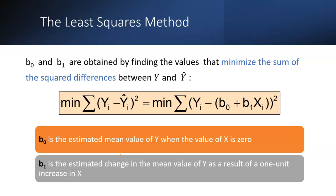The least squares method is very important for prediction. B0 and B1 are obtained by finding the values that minimize the sum of the squared differences between Y and Y-hat (the predicted value). The formula minimizes the sum of (Yi minus B0 plus B1*Xi) squared. B0 is the estimated mean value of Y when X equals zero, and B1 is the estimated change in the mean value of Y for a one-unit increase in X.